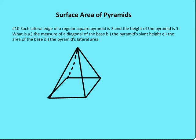In this lesson, we're going to tackle a couple of problems on surface area of pyramids. A pyramid has just one base, and a regular pyramid has a base which has all the sides that are congruent and all the angles that are congruent.